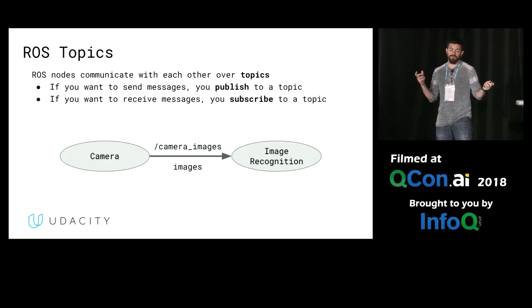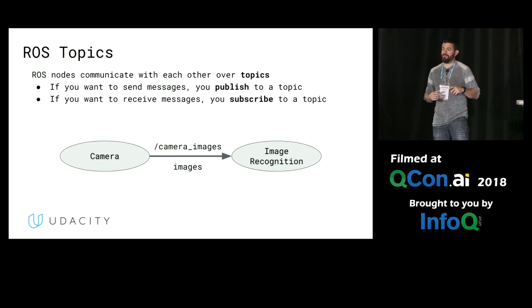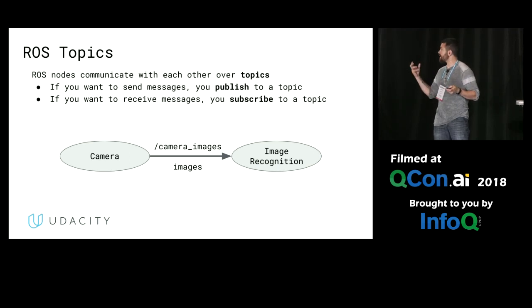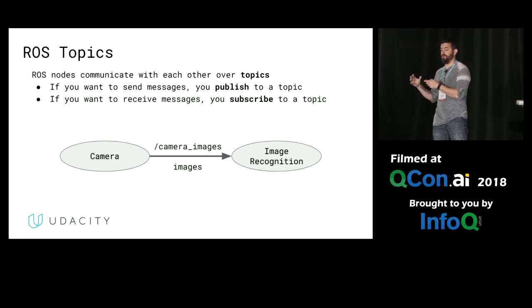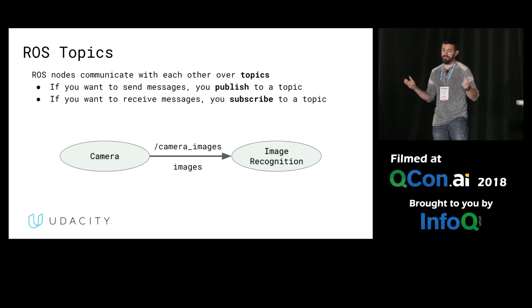So how do you communicate between these nodes? That's something called ROS topics. ROS topics allow you to communicate between ROS nodes. The topics allow you to either publish or subscribe — so it's a pub-sub architecture. Here you can see your camera: over the camera images topic, you would publish data. Then your image recognition node can subscribe to that topic, get that information, and run your algorithms on it. You could also tie in another node that needs that camera imagery as well — it's just pushing the data out, and anybody that wants to listen in can listen in.